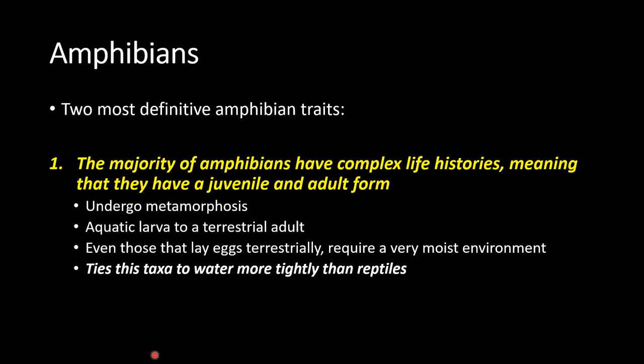The frogs and toads of North Dakota are both amphibians. Frogs, toads, and salamanders are the three types of amphibians we have in North Dakota. Amphibians really have two definitive traits — they have lots of other things that make them unique, but two big things set amphibians apart from reptiles.